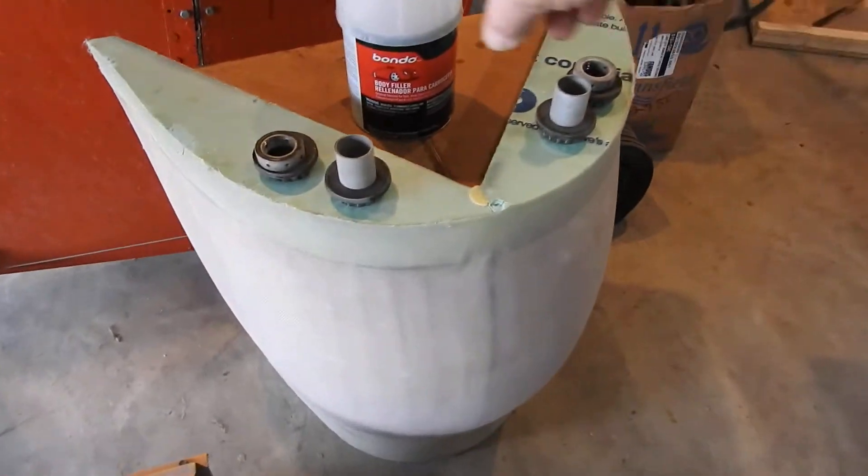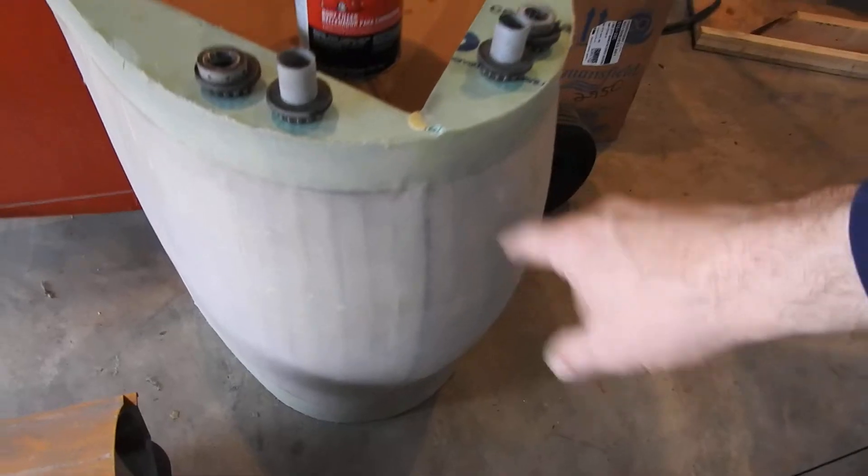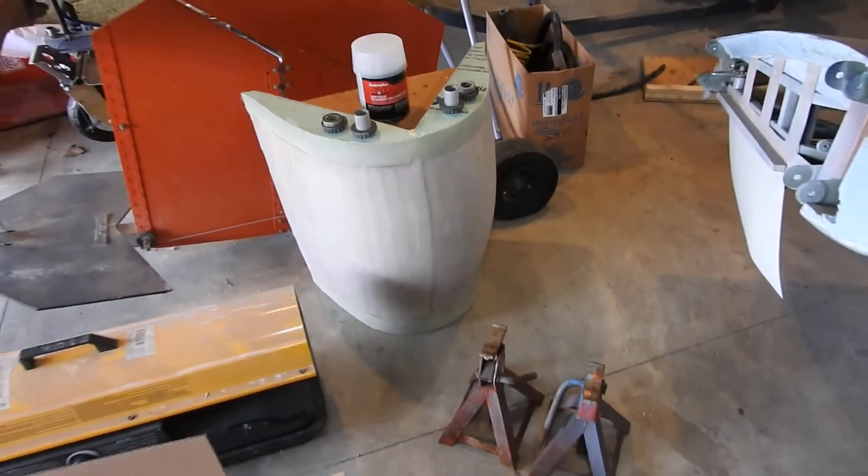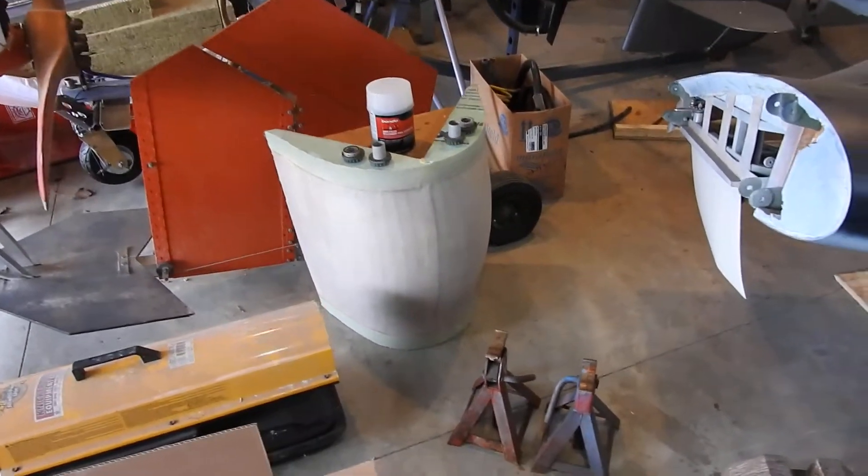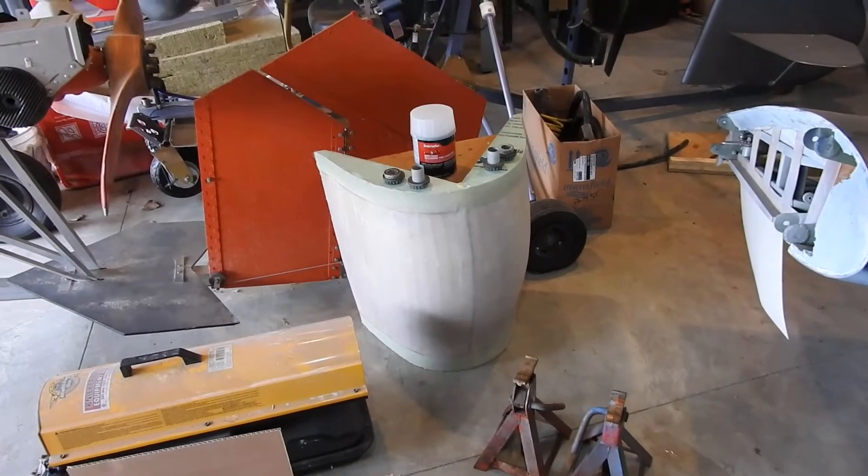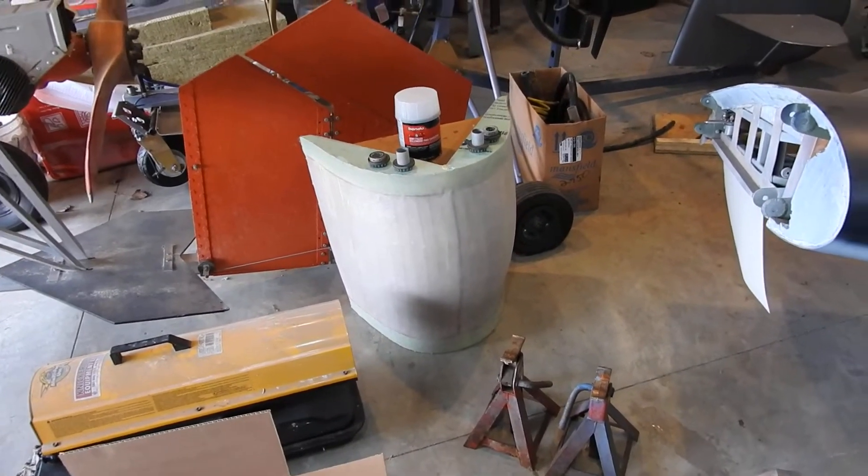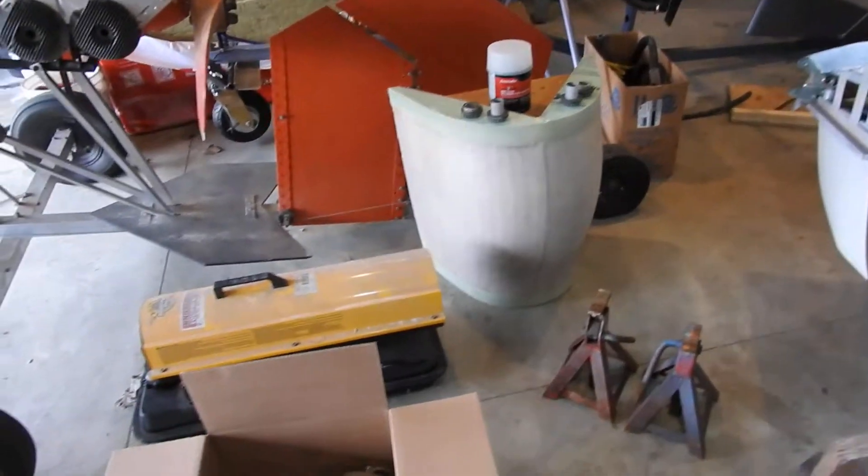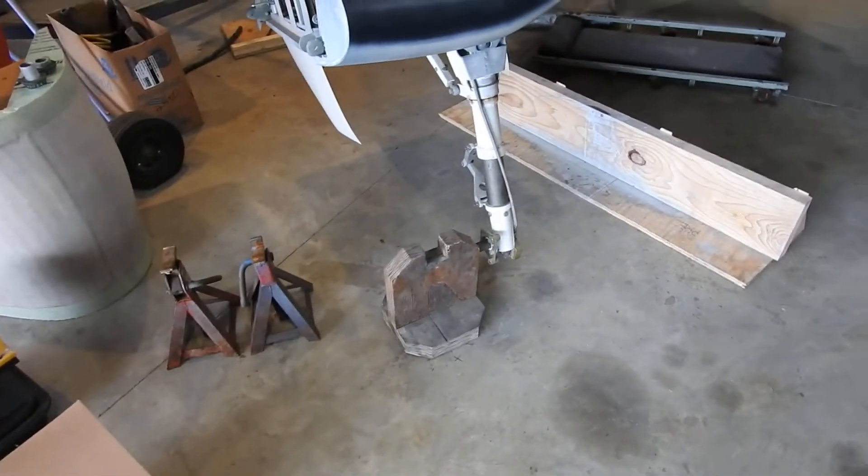By the way, I bought a can of Bondo for this so I can get to work on that. And that is good all the way down into the 40 degrees so I can do that any time now. My idea was to get the plexiglass formed for the windshield and then I was going to work on that. But in the meanwhile, I ordered two new tires for the airplane.